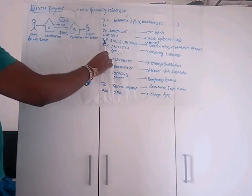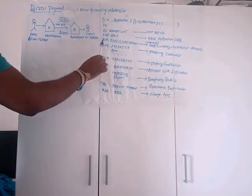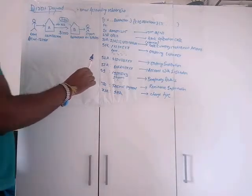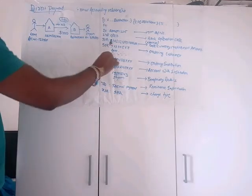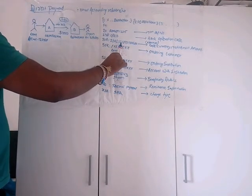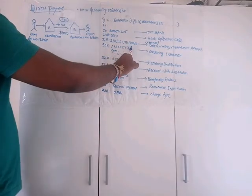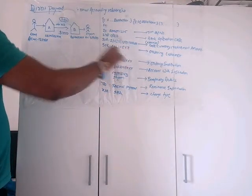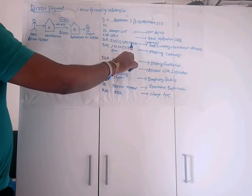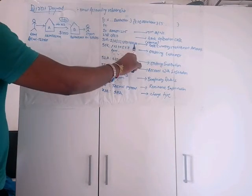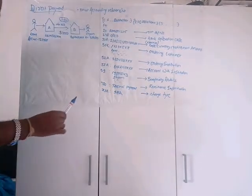Tag 32A is the value date, currency, and settlement amount. Today is 12th January 2021, so it will be 210112, followed by the currency and settlement amount. Since it is a shared charge type, the settlement amount is the same as the transfer amount, and charges will be settled internally.